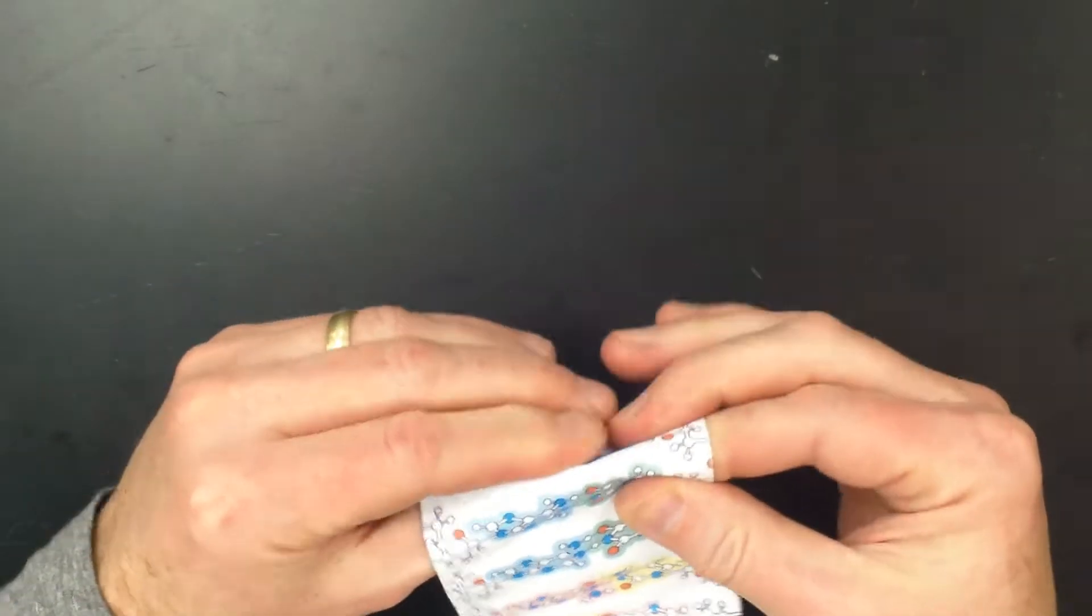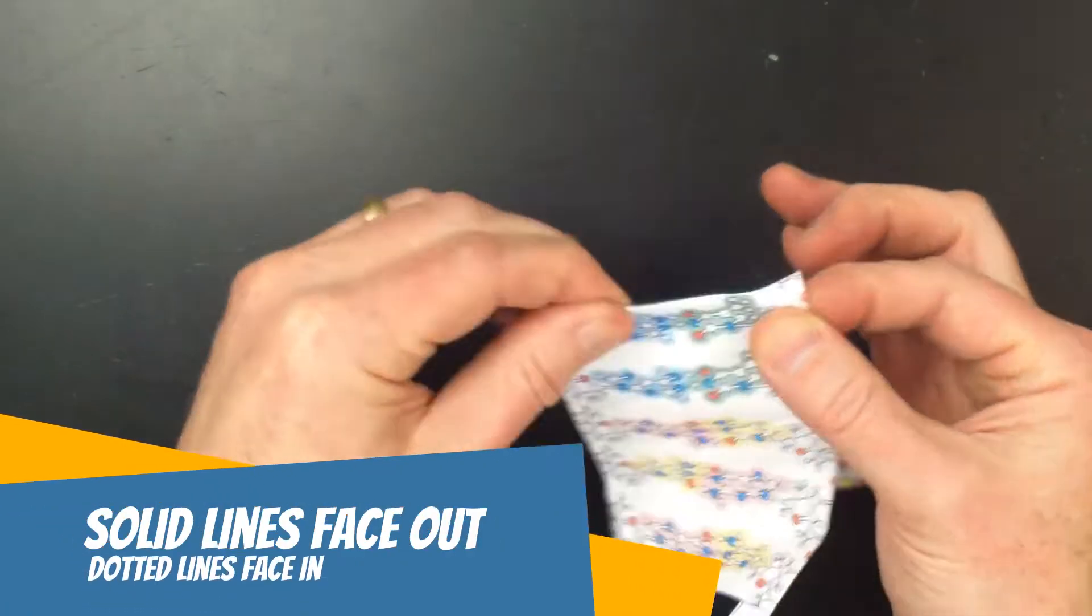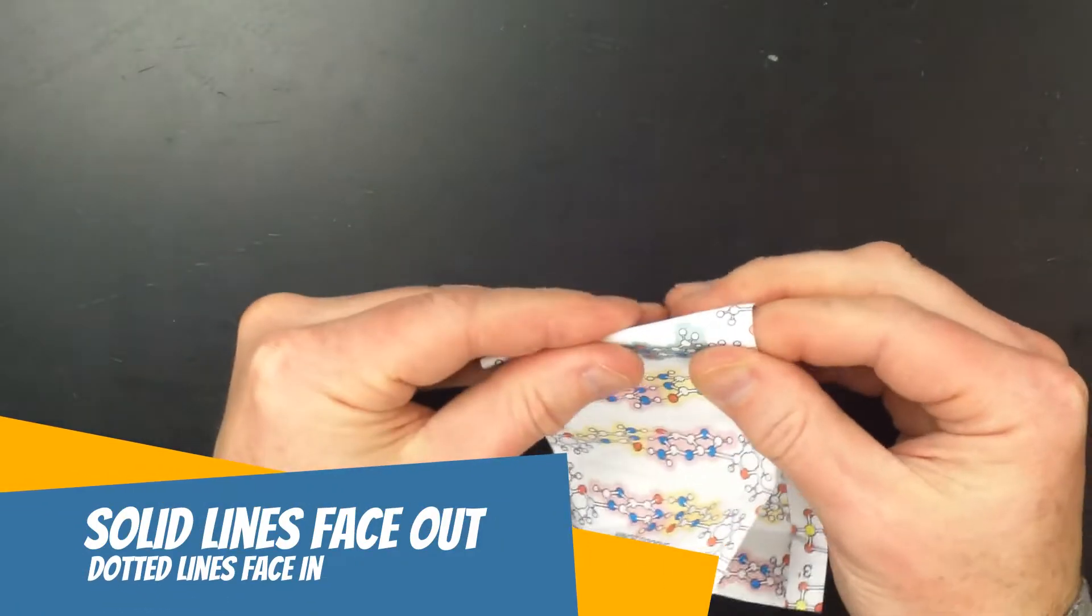Make sure to fold all these lines so solid lines are on the outside edge of the fold and dotted lines are on the inside edge of the fold.